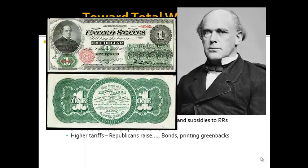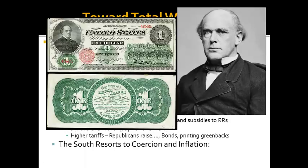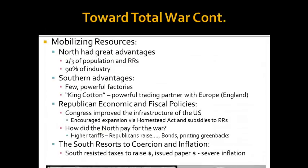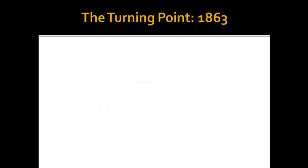Democrats, on the other hand, wanted to see tariff rates go down — Democrats down, Republicans raise. The North also issued bonds and printed greenbacks. Salmon P. Chase was Lincoln's Secretary of the Treasury and later Chief Justice of the Supreme Court — and he happened to be from Cincinnati. A lot of these greenbacks were produced under his leadership, and he was actually on the $1 bill back then. The South, by contrast, resisted taxes and instead issued paper money, which led to just awful, horrific inflation.